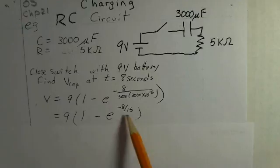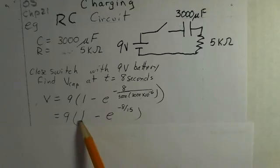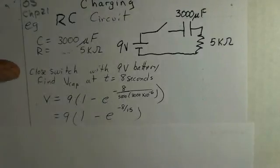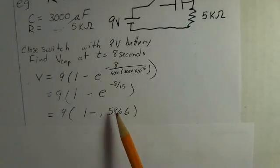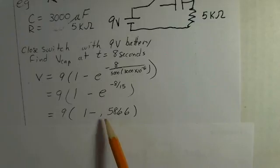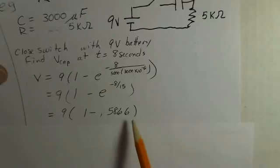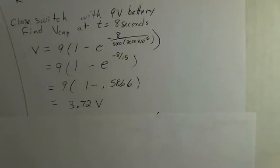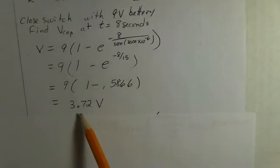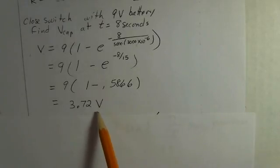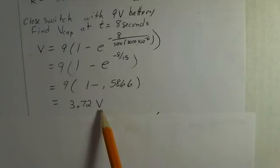So, our task is not too difficult. We need to mathematically evaluate E to the minus 8 divided by 15, put a negative sign on that, add it to 1 and multiply by 9. The exponential is 0.5866. You should pause the video and work this out on your own calculator. Make sure you obtain that result. I've rounded a little bit, of course. Then subtract from 1 and multiply by 9. 3.72 volts is the potential across the capacitor at a time of 8 seconds.